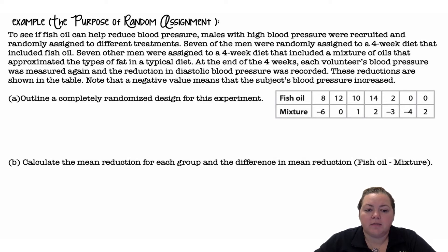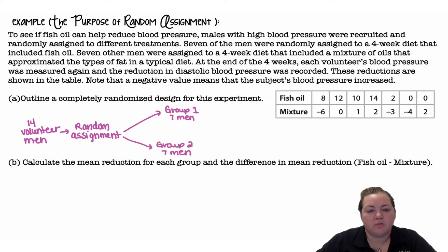Outline a completely randomized design for this experiment. We have 14 volunteer men, we used random assignment to break them up into two groups. Group 1 has seven men, Group 2 has seven men. Group 1 is going to get the fish oil, Group 2 is going to get the mixture, and we are going to compare changes in blood pressure.